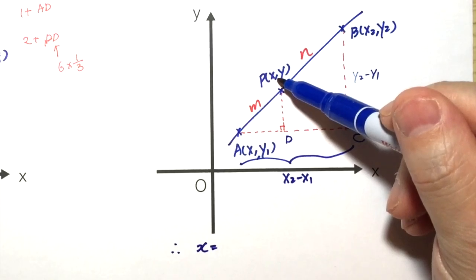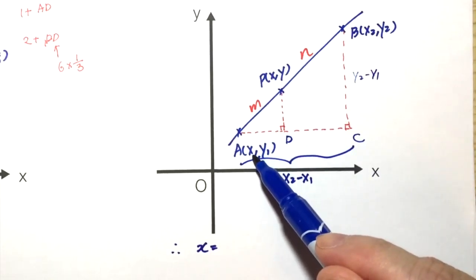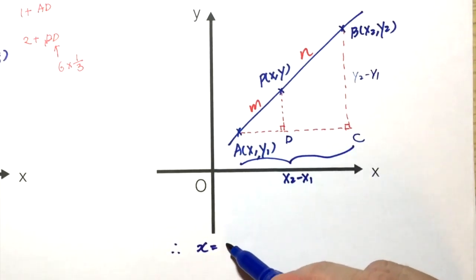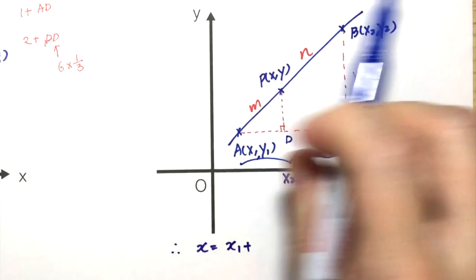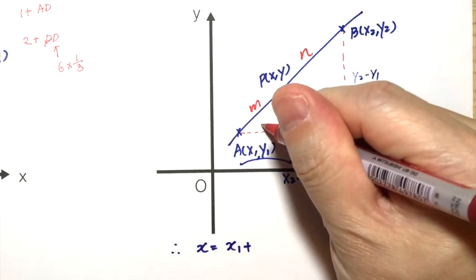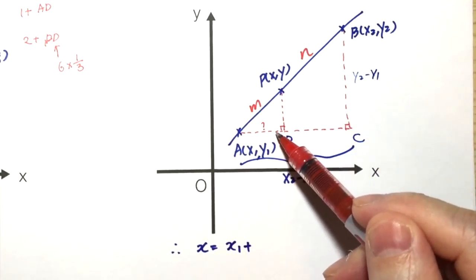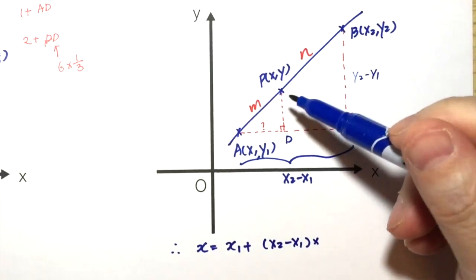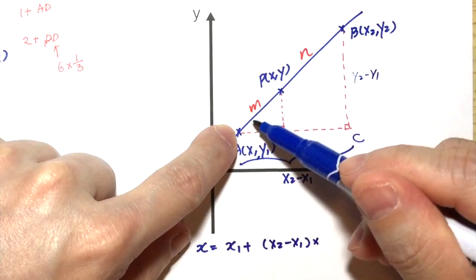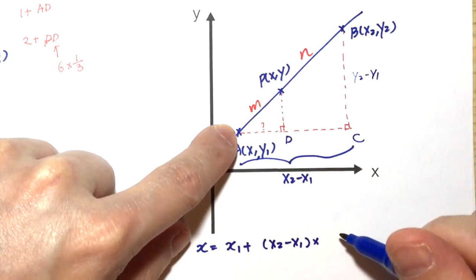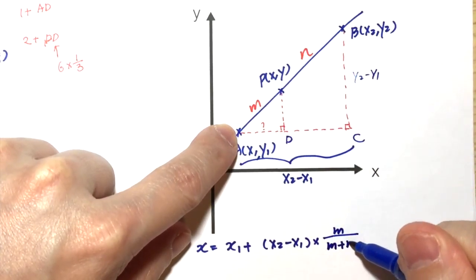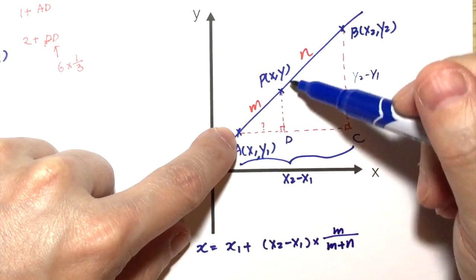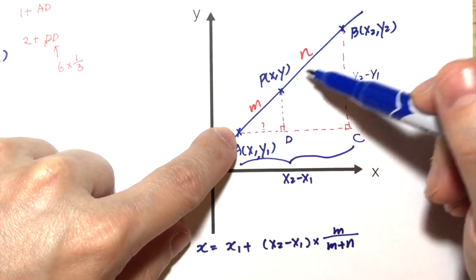Therefore, the x-coordinate of P will be the x-coordinate of A, which is x1, plus this part AD. What is the length of AD? It will be the total length of AC, which is x2 minus x1, times this fraction, the ratio m to m plus n, because m is only one part of the total length of m plus n.